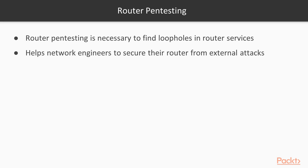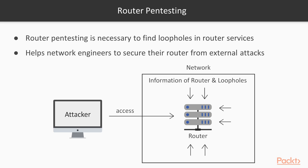Router pen testing is necessary to find loopholes in router services. For example, an attacker wants to access the router because the router contains all the services — if an attacker gains access, they can manipulate and insert all the services. Router pen testing means getting information about router vulnerabilities or loopholes, and by finding them you can secure your network. It helps network engineers secure their router from external attacks.